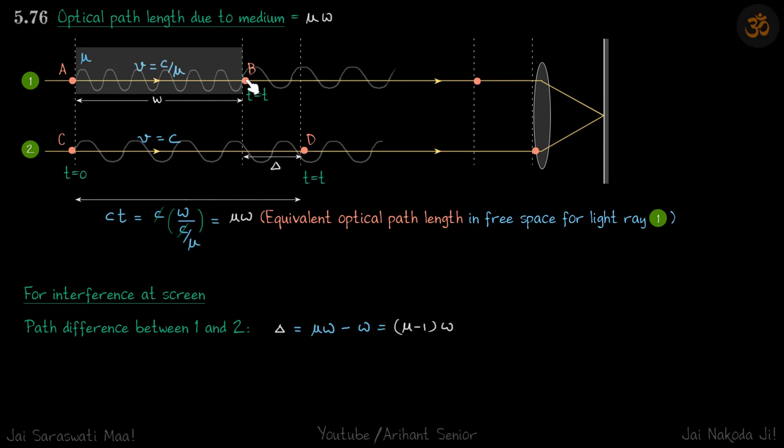If the slab was not there, both points would have reached the same position at the same time. But because of the introduction of the slab, one ray is now lagging behind. This difference continues along both rays, and when one reaches a given point, the other is still behind — so a path difference is introduced between the two rays, which causes a different kind of interference at the screen.